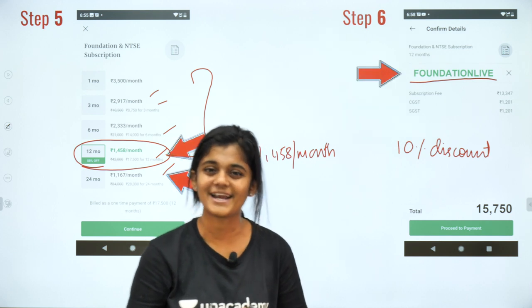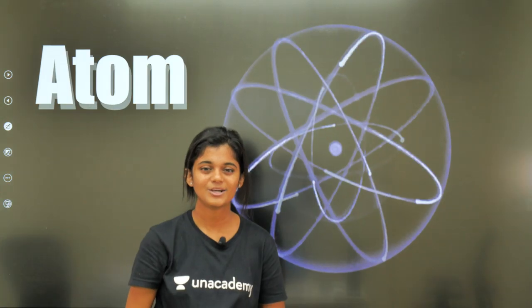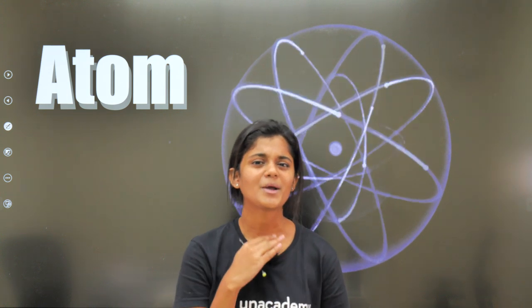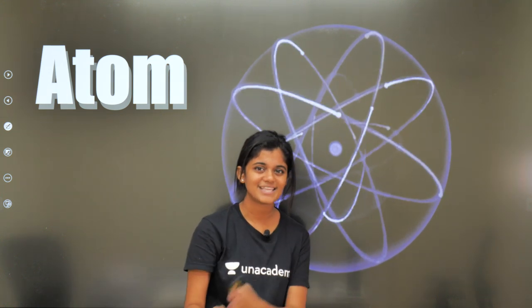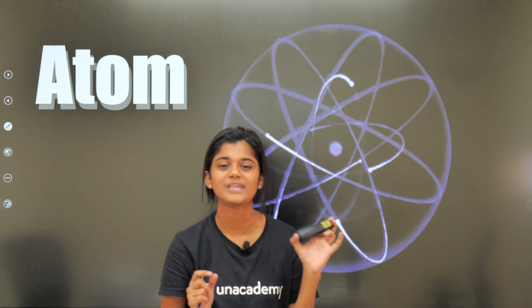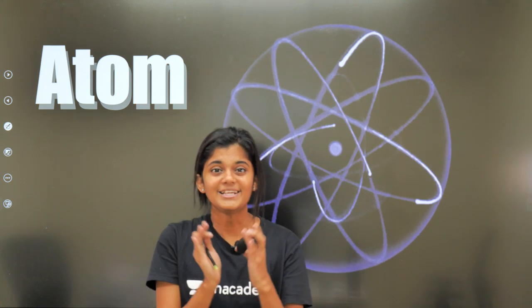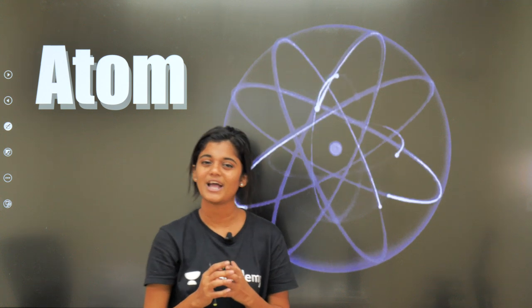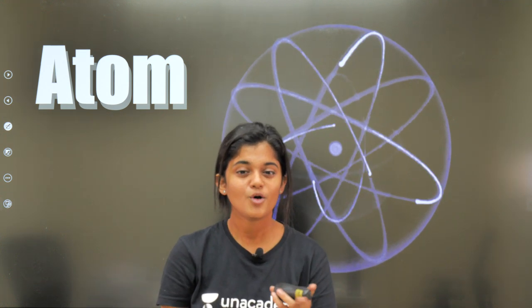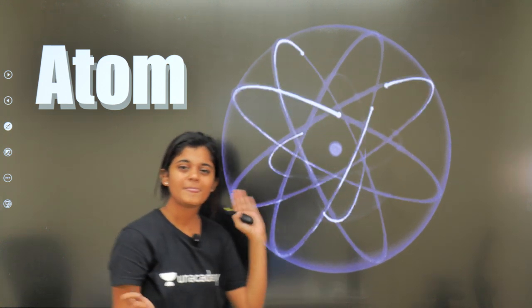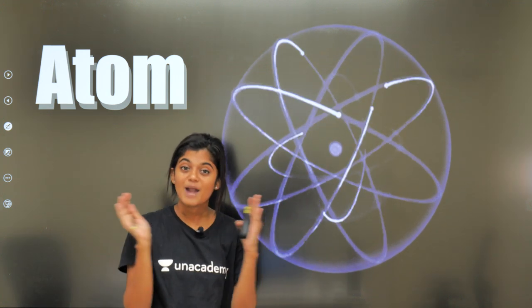So today we start our lecture — the topic is Atoms and Molecules. We have been talking about this since our ninth chapter. Everything in the universe is made up of atoms. The matter in our surroundings is all matter, and matter is made up of so many molecules. Those molecules are made up of atoms — it's the combination of atoms that forms molecules, and the combination of molecules forms matter, which is everything we see around us.